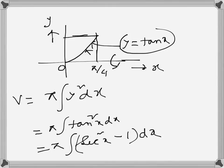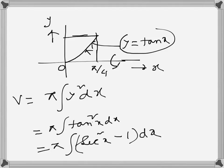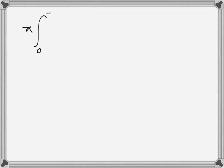Now we do this integration. The limits are 0 to π/4. So this is π times the integral from 0 to π/4 of sec²x dx minus π times the integral from 0 to π/4 of dx.